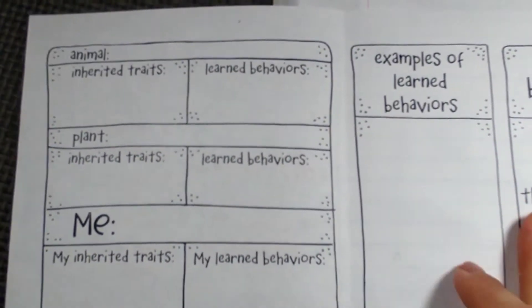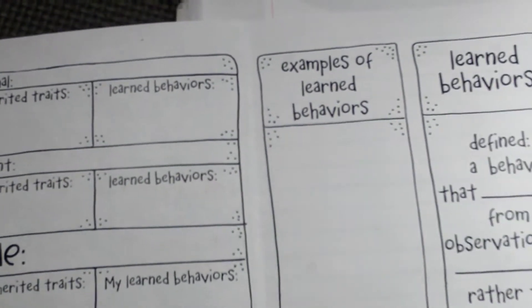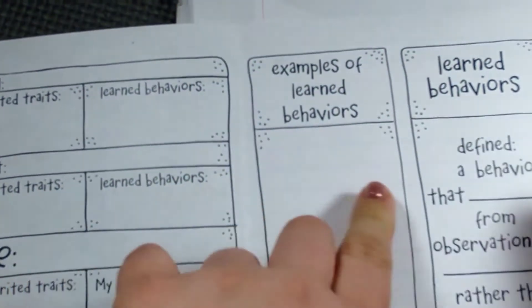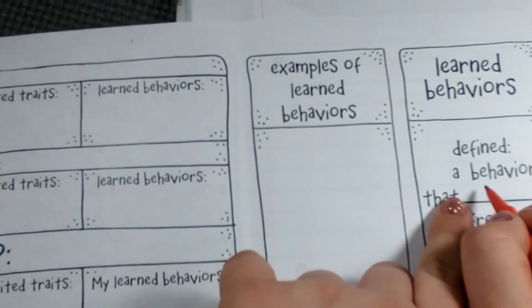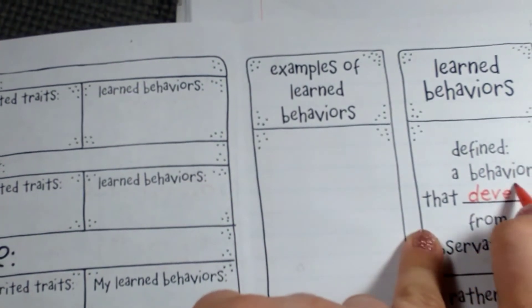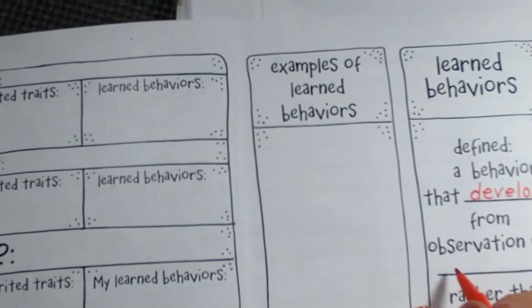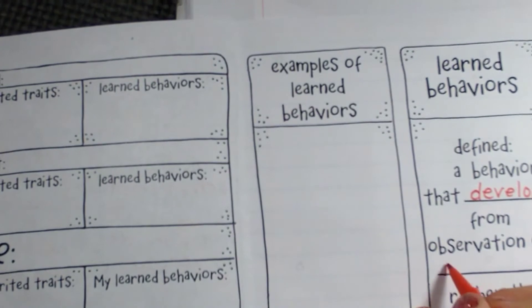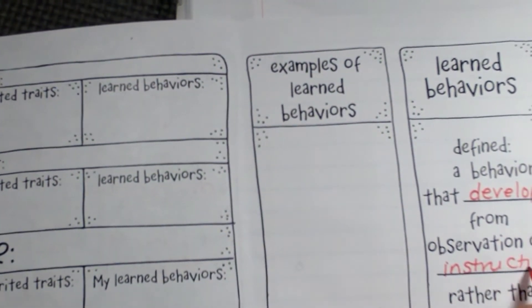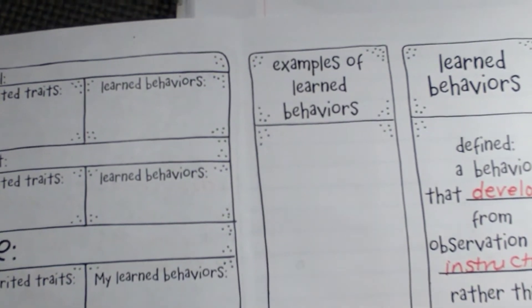The next one — a learned behavior is defined as a behavior that develops from observation or instruction, rather than being passed down from your parents. So in other words, it's something that you learn; it's not something you're born with.